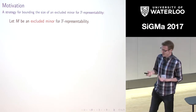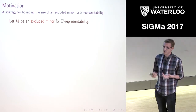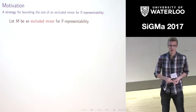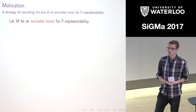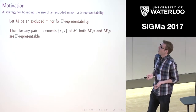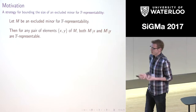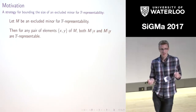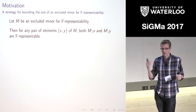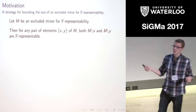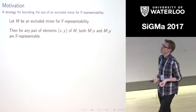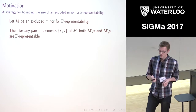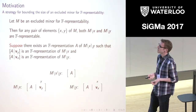The argument I'm going to give here uses essentially the ideas from the Geelen–Gerards–Kapoor proof for GF(4). To start with, we've got an excluded minor. So if you were to delete an element X or delete an element Y, we'd become F-representable, and we have F-representations for these matroids.